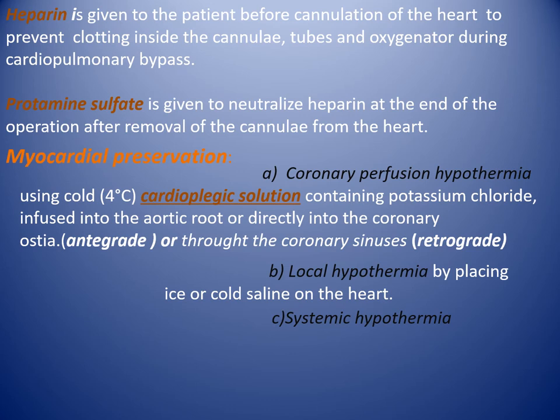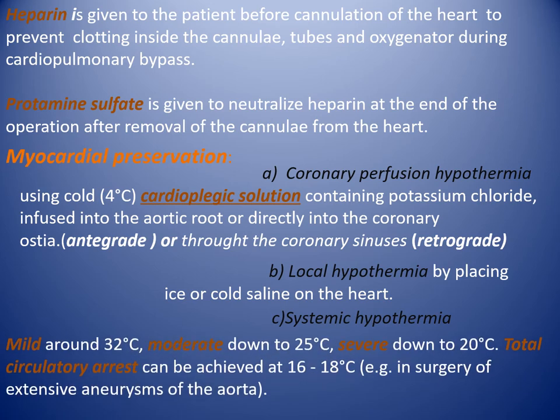Antegrade cardioplegia or retrograde cardioplegia through the coronary sinus. Local hypothermia by placing ice or cold saline on the heart. Systemic hypothermia: mild around 32 degrees centigrade, moderate down to 25 degrees centigrade, severe down to 20 degrees. Total circulatory arrest can be achieved at 16 to 18 degrees centigrade, for example in surgery of extensive aneurysm of the aorta. Hypothermia is achieved by the heater-cooler in the heart-lung machine.